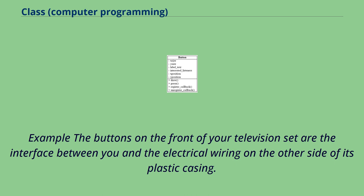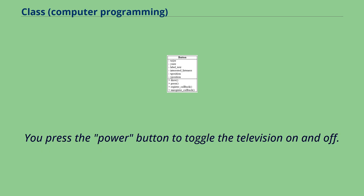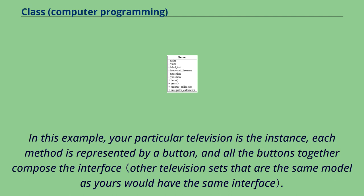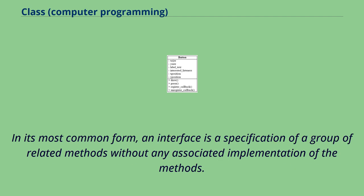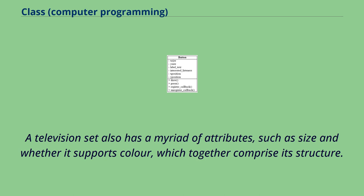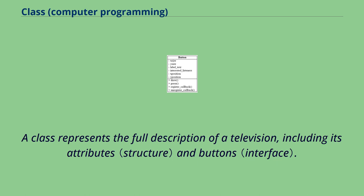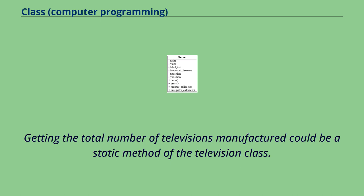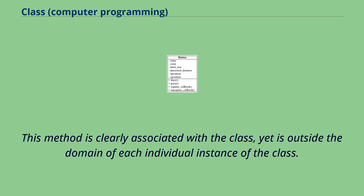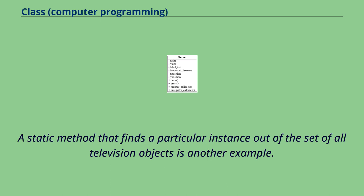For example, the buttons on the front of your television set are the interface between you and the electrical wiring on the other side of its plastic casing. You press the power button to toggle the television on and off. In this example, your particular television is the instance, each method is represented by a button, and all the buttons together compose the interface. An interface is a specification of a group of related methods without any associated implementation. A television also has attributes such as size and whether it supports color, which together comprise its structure. A class represents the full description of a television, including its attributes and buttons. Getting the total number of televisions manufactured could be a static method of the television class, while a static method that finds a particular instance out of the set of all television objects is another example.